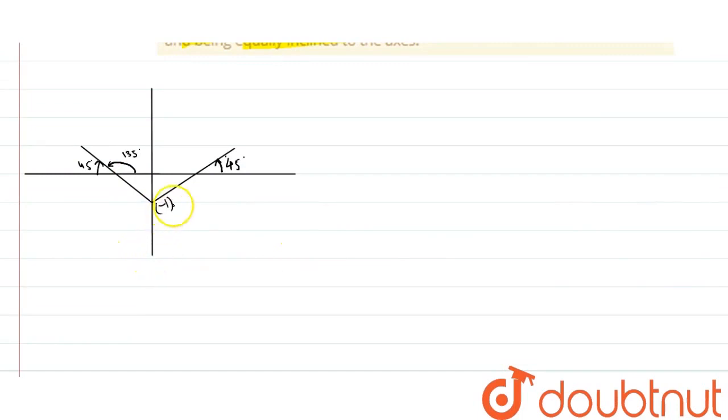Therefore, what I can do is, these two angles, I have written these two angles. Now, I have to put the value of tan here, just to find out the slope of the lines.